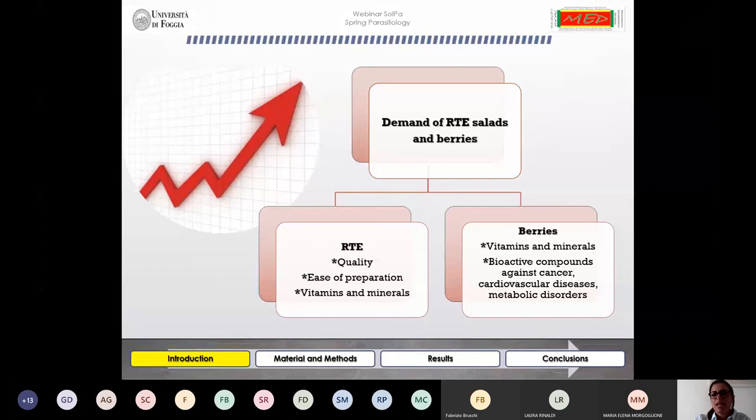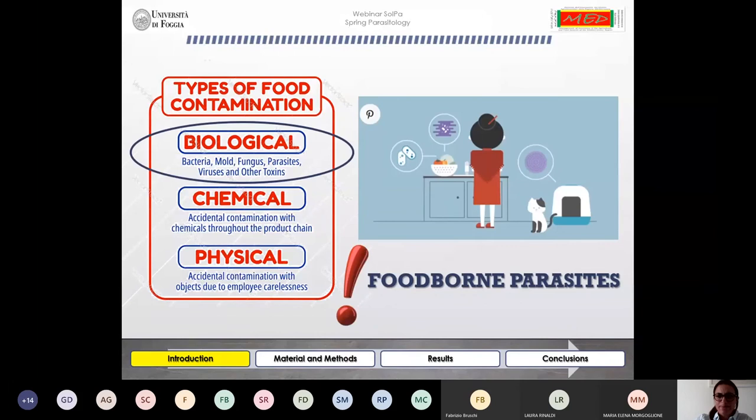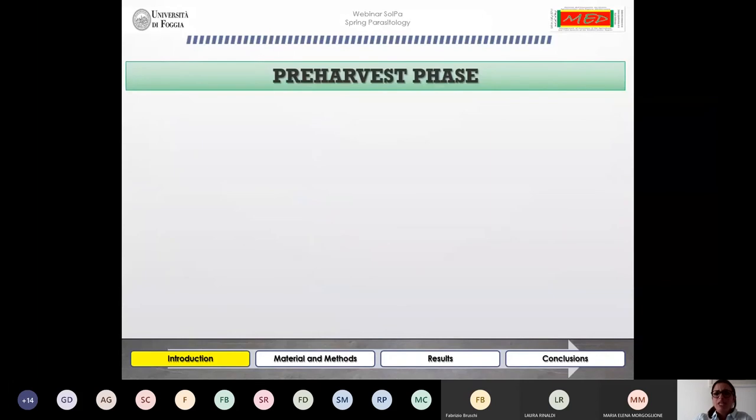However, these fresh produce can be contaminated by a variety of microorganisms including parasites. This contamination can occur during each step of the food production chain from farm to fork.